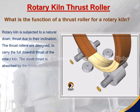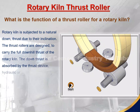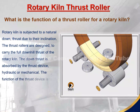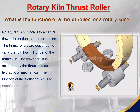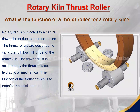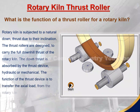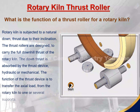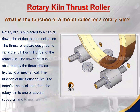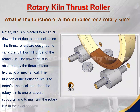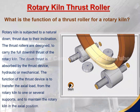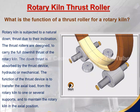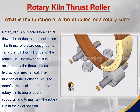The down thrust is absorbed by the thrust device, either hydraulic or mechanical. The function of the thrust device is to transfer the axial load from the rotary kiln to one or several supports, and to maintain the rotary kiln in the axial position.